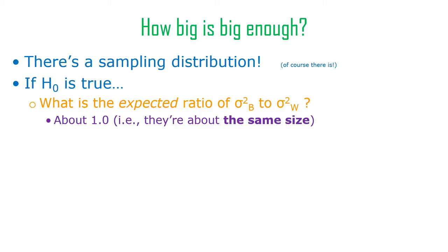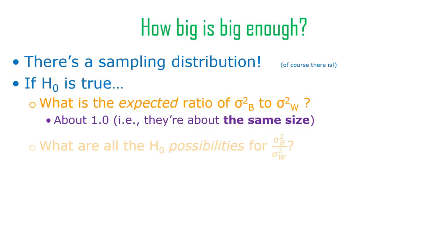In other words, they're kind of about the same size — if you divide something by itself you get one. If you get a ratio that's close to one, you know you're not going to find any significance. So the expected value under the null hypothesis is generally about one, but it depends on degrees of freedom — how many groups you have, how many observations you have.